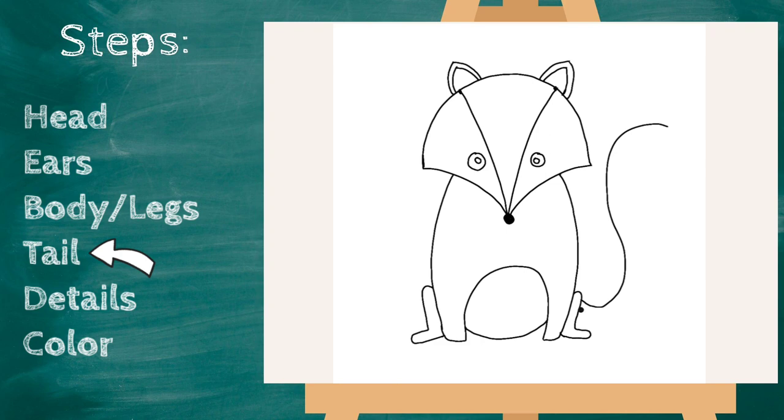And notice how his tail, it's gonna be smaller at the bottom. So we're gonna start here and curve out and meet it right there at the top. So it starts off small and gets thicker, and then it gets smaller at the bottom.